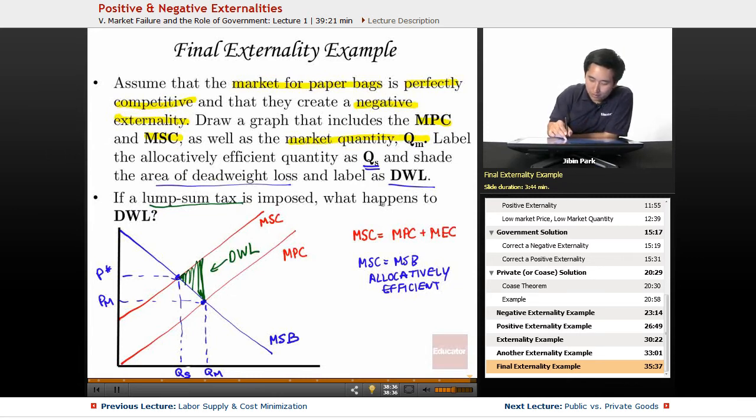In this case, if a lump sum tax is imposed, what happens to deadweight loss? Well, if there's a lump sum tax, it doesn't affect any of the marginal cost. None of the profit maximizing quantity changes, so what happens to the deadweight loss? It stays the same. The DWL stays the same.